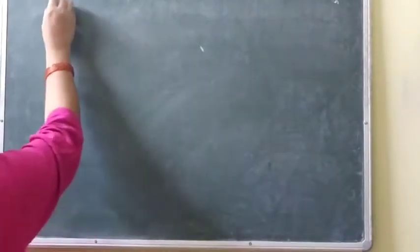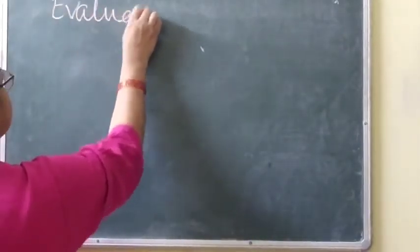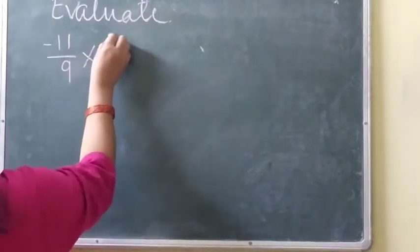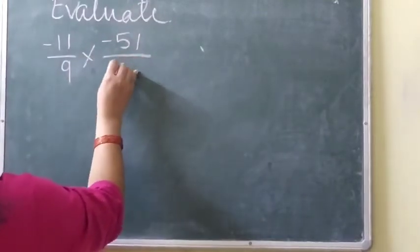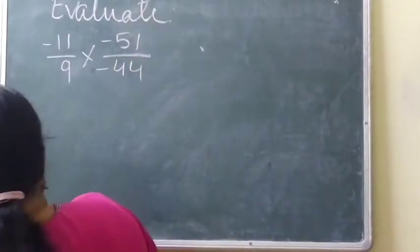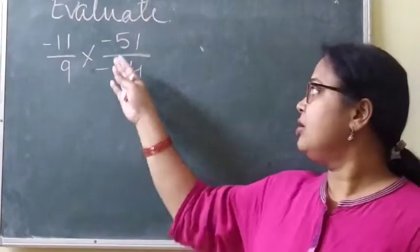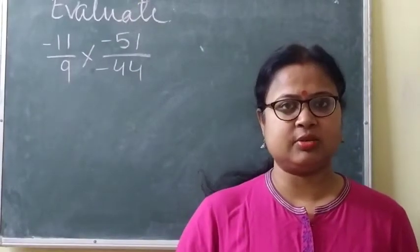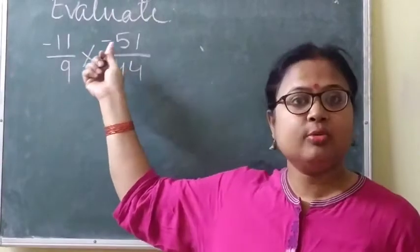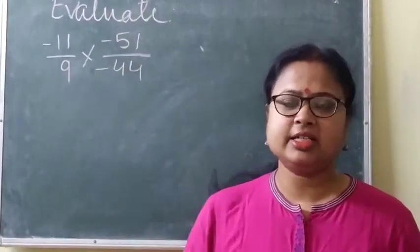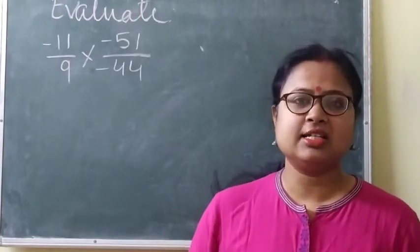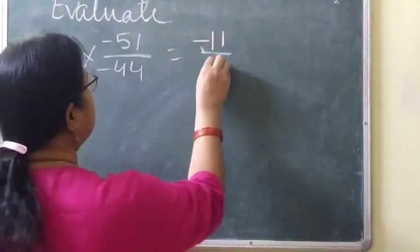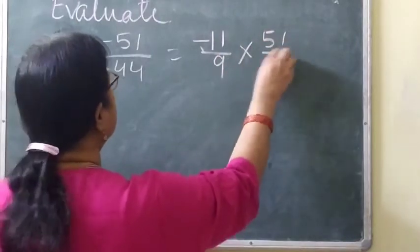Question number 1: evaluate minus 11 by 9 into minus 51 by minus 44. Here you can see that in the numerator as well as in the denominator a minus sign is there. What we will do? As I explained earlier, we will cancel the signs. So we will write in simplified form: minus 11 by 9 into 51 by 44.